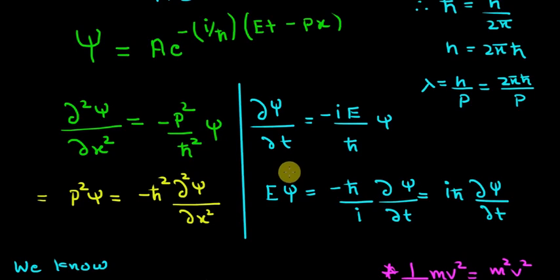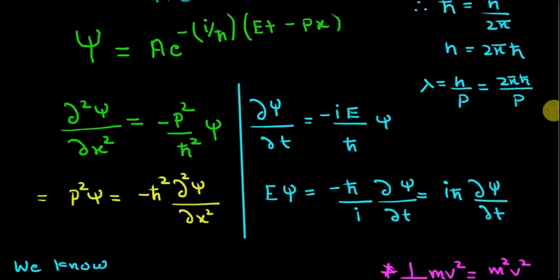Similarly, if we differentiate with respect to time we get minus iota by h-cut E times this whole thing, that is ψ. So now we just need p² ψ and E ψ. Keep that here and take everything else after the equal to.